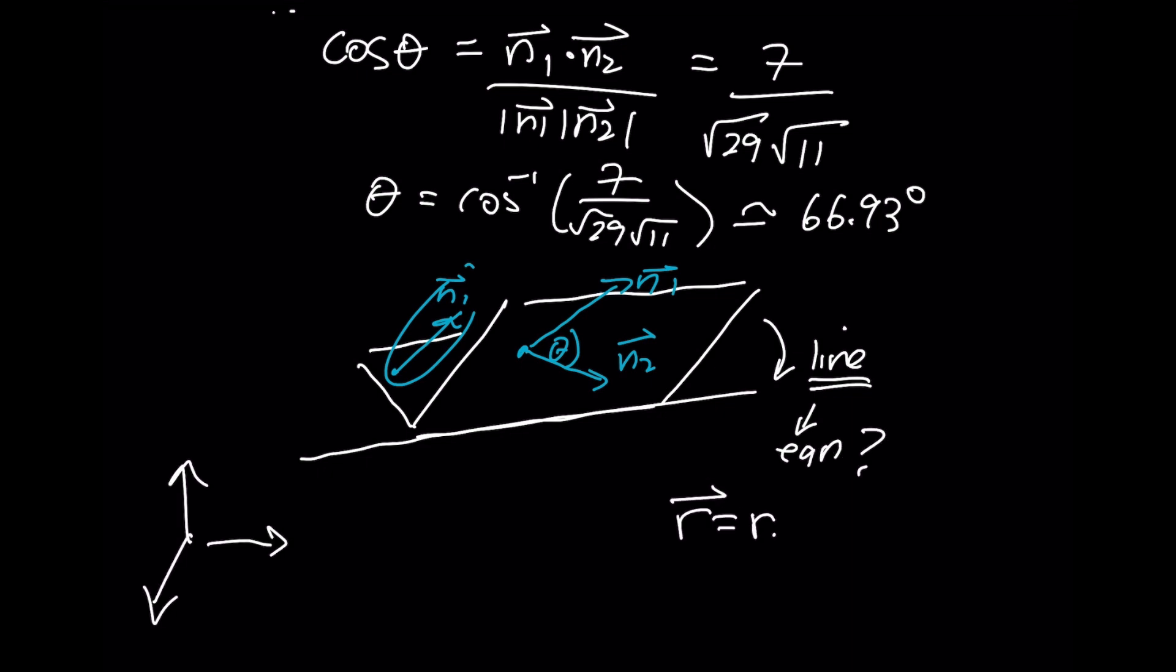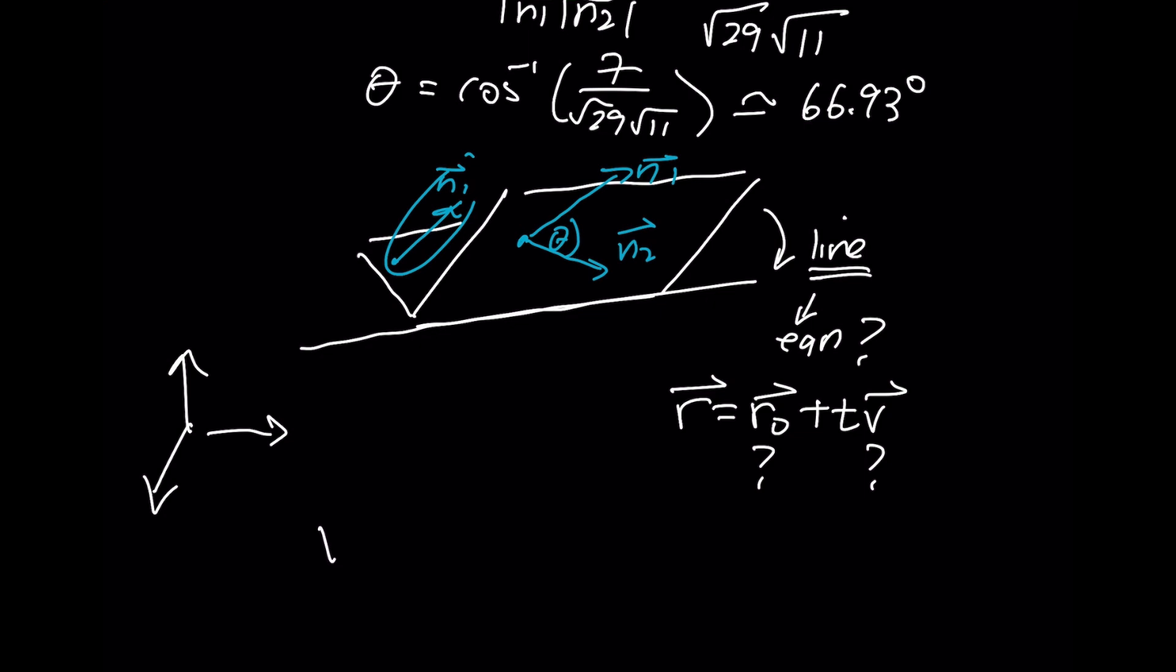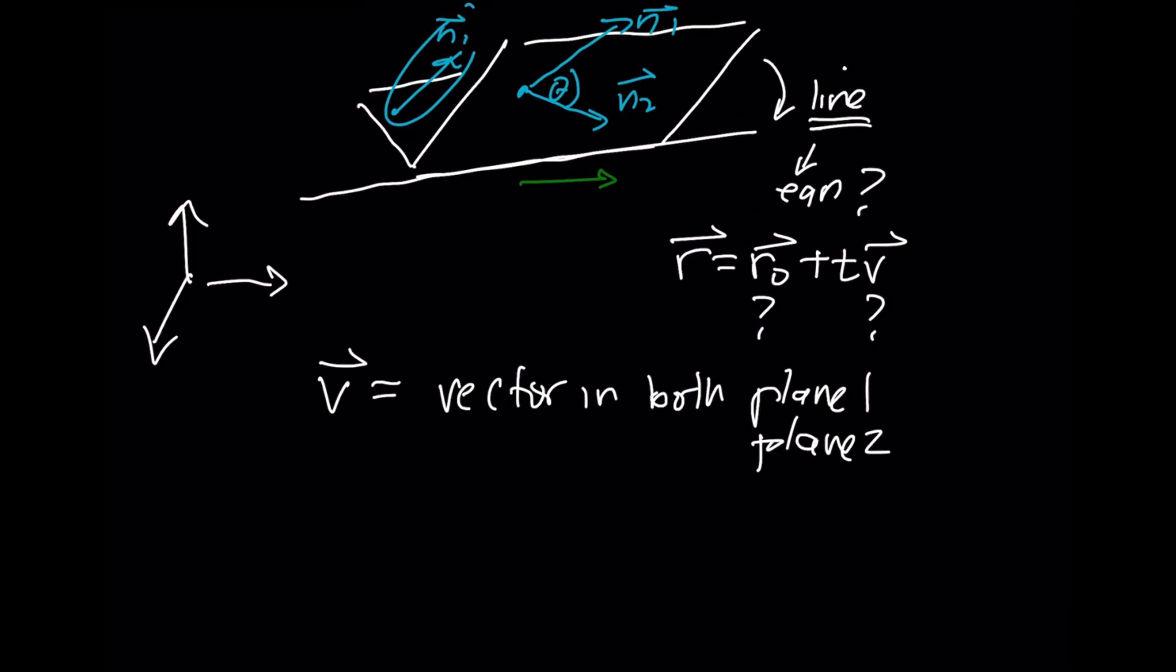R₀ + tv. I need to know this R₀ and I need to know this V. V is a vector in this direction. V is a vector in both plane 1 and in plane 2. That means by the definition, the equation of a plane, V has to be orthogonal to both planes. And that means that V has to be orthogonal to both n₁ and n₂.